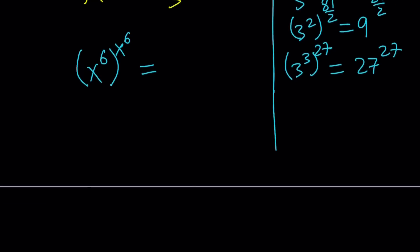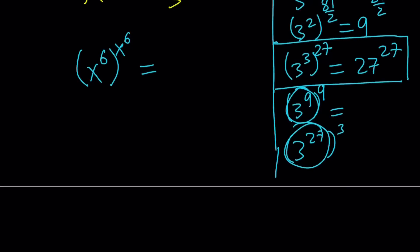And no other power is going to work, because if you try any higher power, like 3 to the power of 9 to the power of 9, you'll get something very large at the base. And 3 to the power of 27 to the third is not going to work either. So, this is the balance, where they're equal.